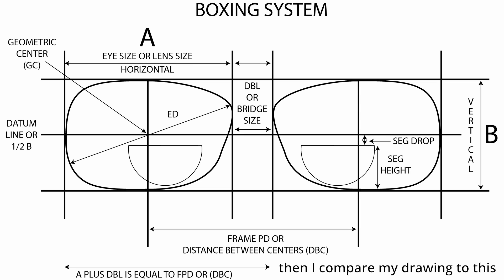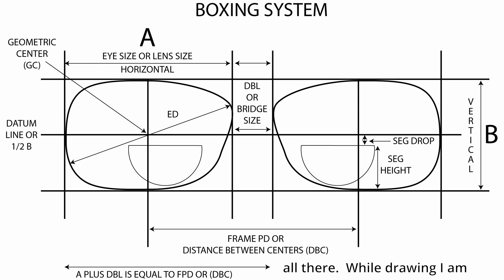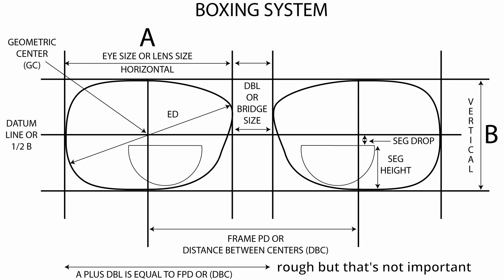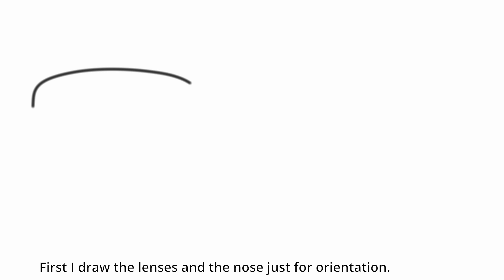I start by drawing the lenses, then I put in as much information as I can remember. Then I compare my drawing to this picture and make note of anything I've forgotten. Then I draw it again and again until I have it all there. While drawing, I'm thinking about each thing I draw. I'm no artist, so the sketches are rough, but that's not important because they're meaningful to me. Here's an example. First, I draw the lenses and the nose just for orientation.